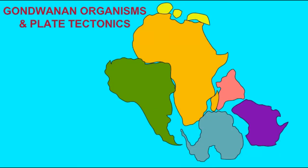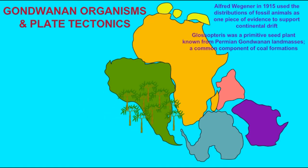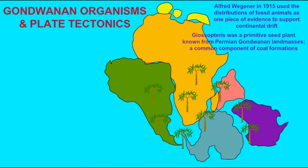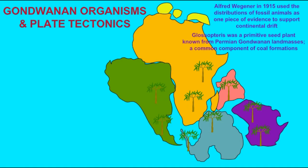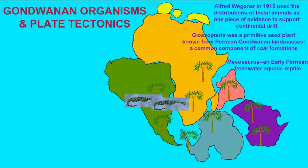Another piece of evidence, known from the early 1900s, was the distribution of many fossils. There was a primitive seed plant, Glossopteris, named for its tongue-shaped leaves, which is known from the southern land masses, where it was prominent in coal formations. This would not have easily spread across oceans to reach South America, Antarctica, Australia, India, and Africa, and was much more easily explained by the fact that these continents had been joined.